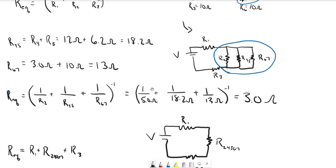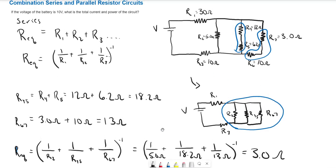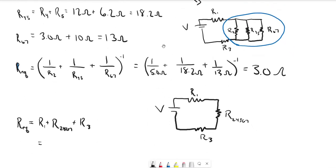And looking back up here, our R1 is 30 ohms, R3 is 10 ohms. And our total equivalent resistance then is just 43 ohms.